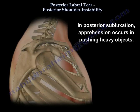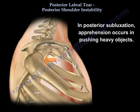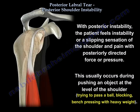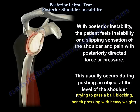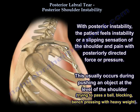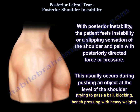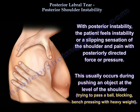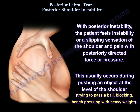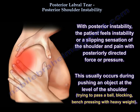In posterior subluxation, apprehension occurs when pushing heavy objects. With posterior instability, the patient feels instability or a slipping sensation of the shoulder and pain with a posteriorly directed force or pressure. This usually occurs during pushing an object at the level of the shoulder, trying to pass a ball, blocking, or bench pressing with heavy weight.